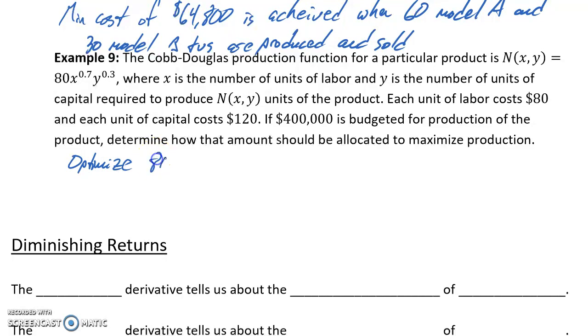So again, in this case, we want to optimize that given function, 80x^0.7 y^0.3, subject to—in this case we need to define this constraint equation, it's not explicitly stated for us—but what we know is that we have a total of $400,000 to spend, and we're going to spend that $400,000 by spending $80 per unit of labor and $120 per unit of capital, giving us a constraint equation of 80x + 120y would equal our $400,000.